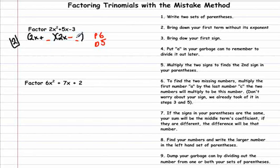So what two numbers multiply to give us 6 and subtract to give us 5? 6 and 1. Now we just have to remember to dump our garbage can because we made a mistake on purpose to figure out these two numbers. We can't take 2 out of this side because 2 won't go evenly into 1, but we can take 2 out of here. And we're left with our final answer, which is x plus 3 times 2x minus 1.